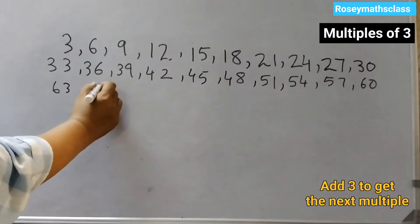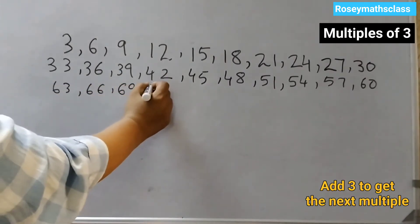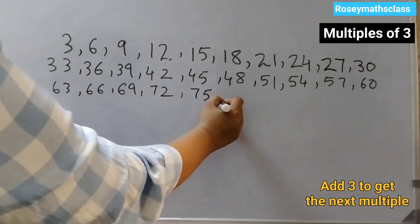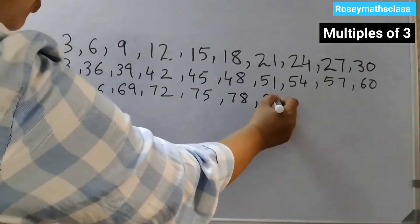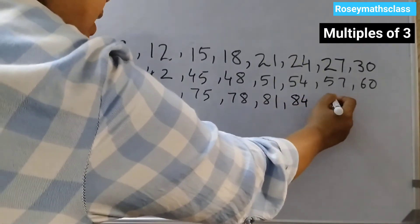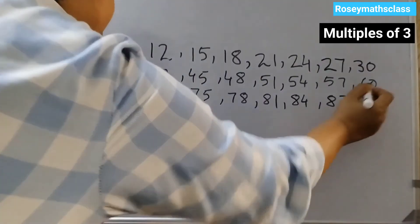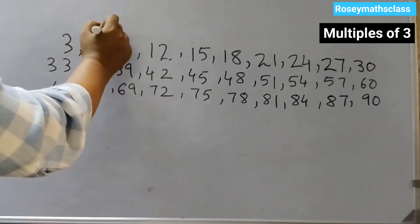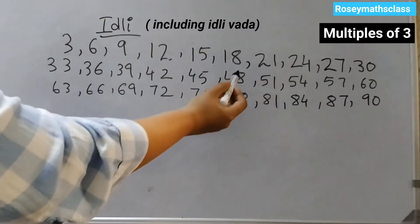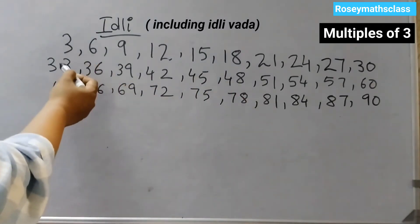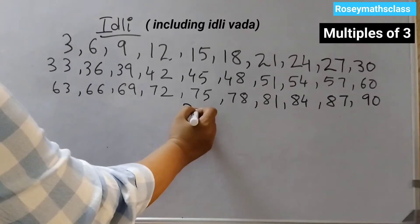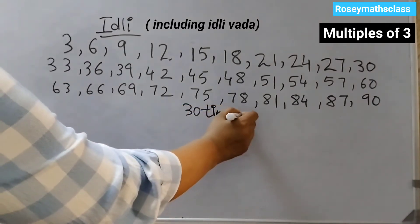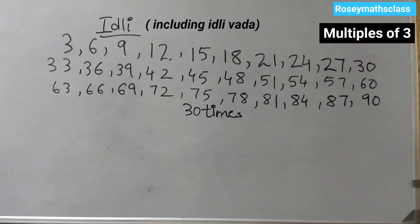Then after 60 same pattern, 63, 66, 69, 72, 75, 78, 81, 84, 87, and 90. These are the multiples of 3. So whenever these numbers would come, the children would say Idli. If you count the first row, there are 10 numbers, so 10, 20, 30. They would say 30 times. The answer for the first part is the children would say 30 times Idli including the times they say Idli Vada.